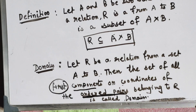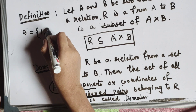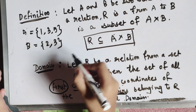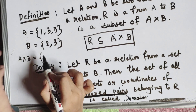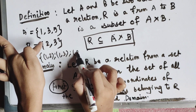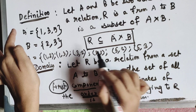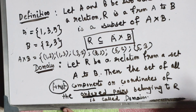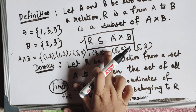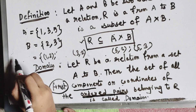Let's take an example. Let A = {1, 3, 5} and B = {2, 3}. Then A cross B = {(1,2), (1,3), (3,2), (3,3), (5,3), (5,2)}. Now let R be a subset of A cross B. We remove two pairs and take R = {(1,2), (3,2), (5,2), (5,3)}.